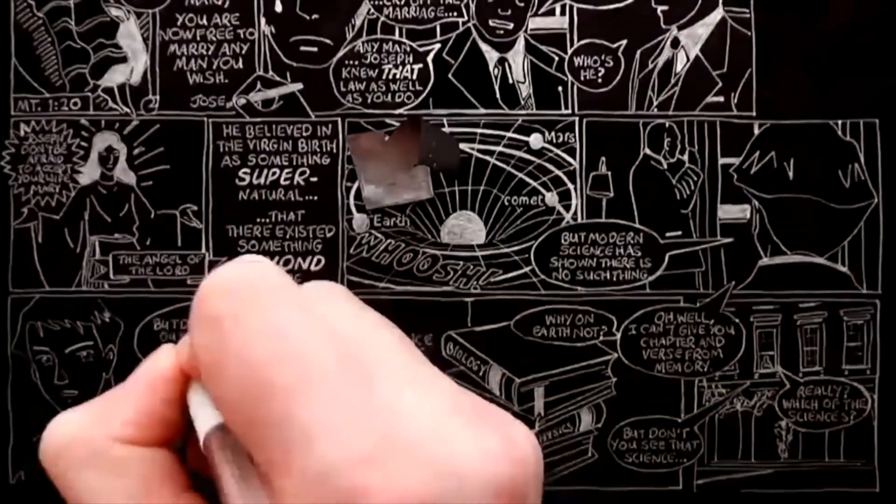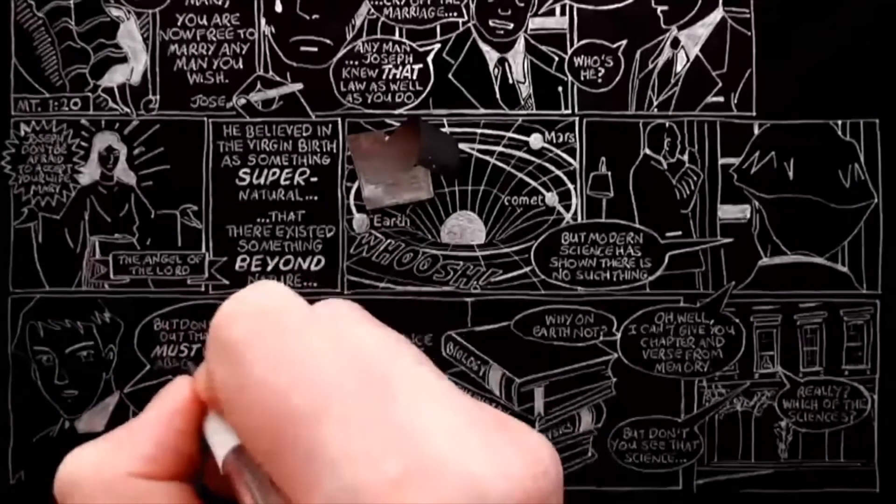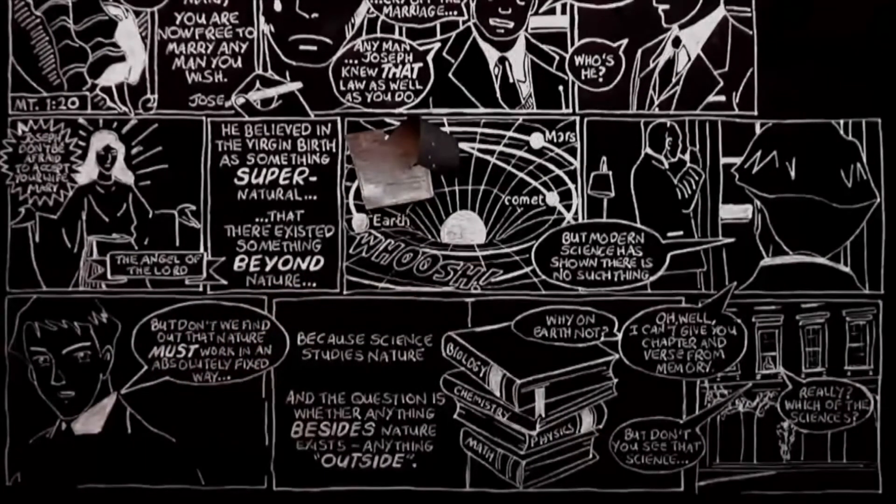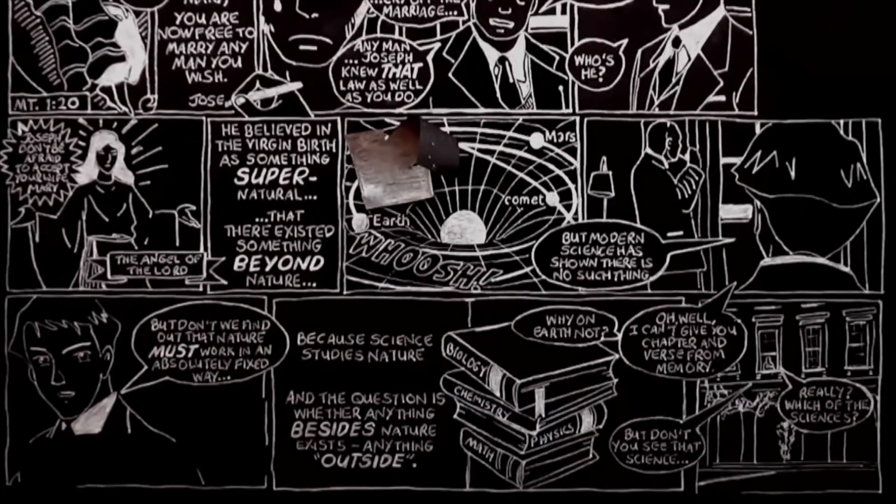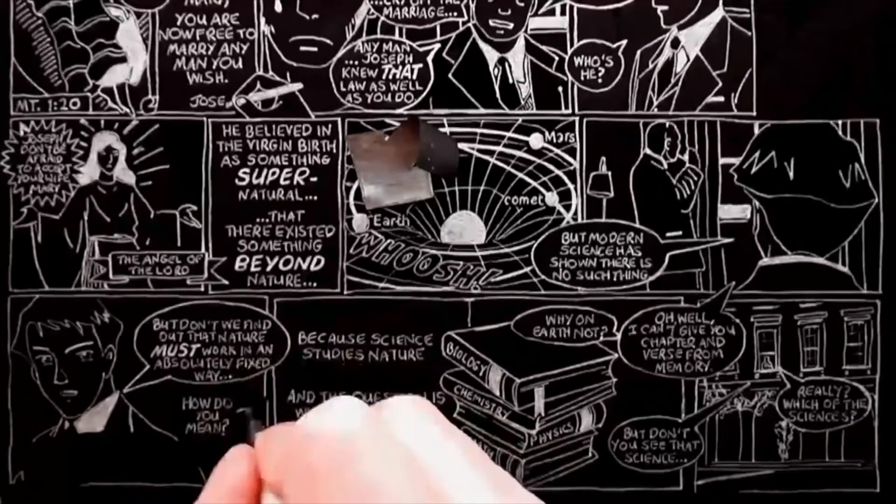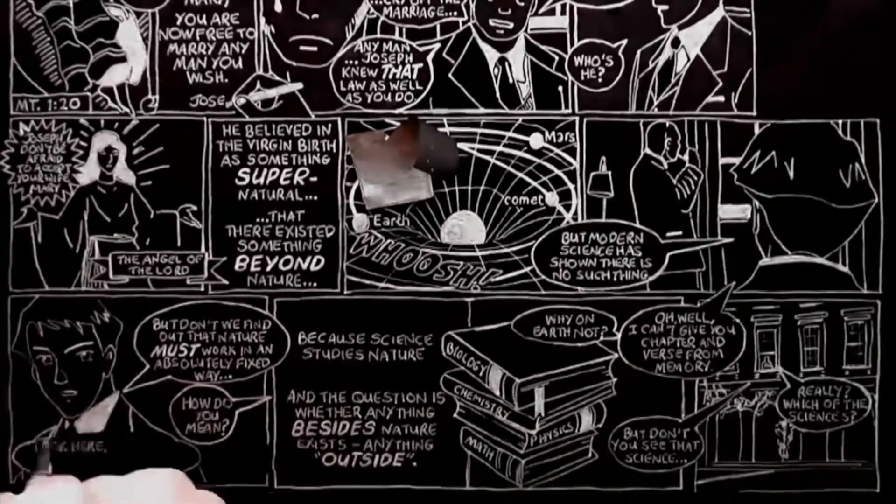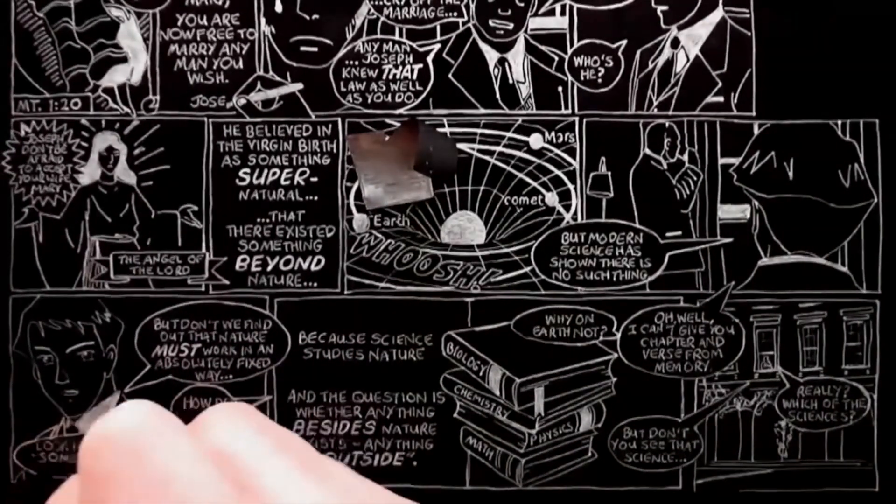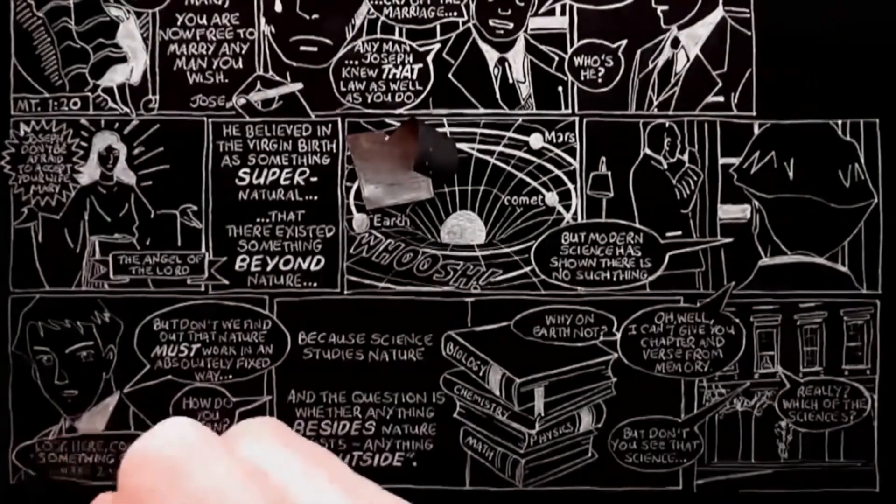But don't we find out that nature must work in an absolutely fixed way? I mean, the laws of nature tell us not merely how things do happen, but how they must happen. No power could possibly alter them. How do you mean? said I. Look here, said he. Could this something outside that you talk about make two and two five?